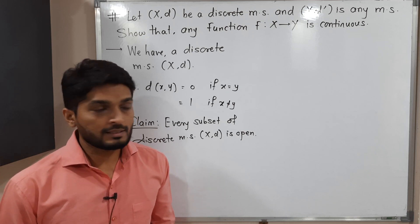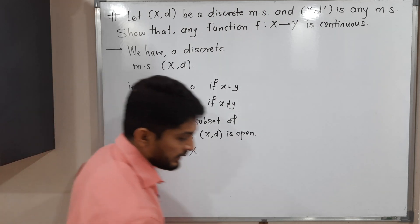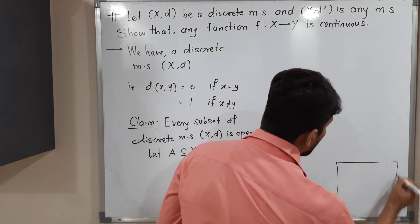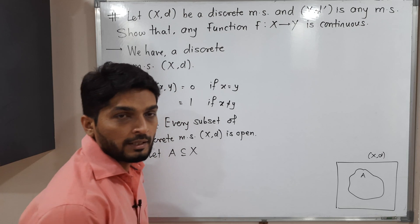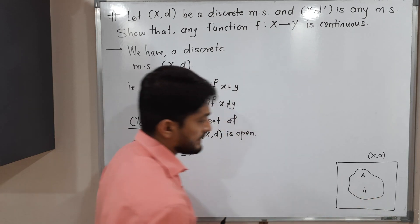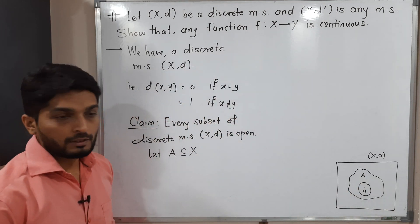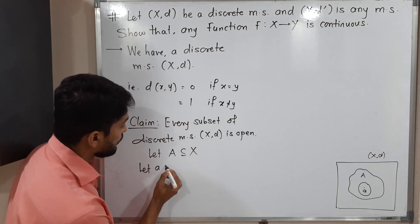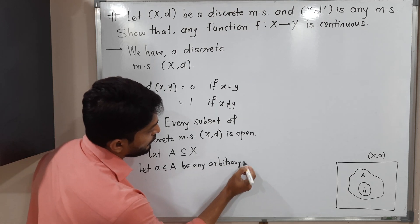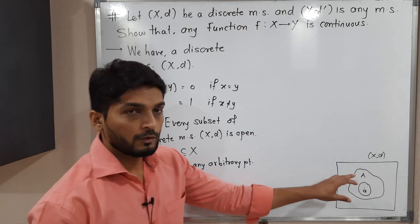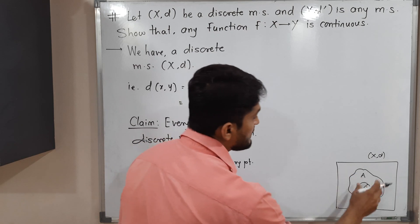Let A be any subset of X. We have to prove this set A is open. To prove any set is open, we take any arbitrary point of that set and find a ball around it which entirely lies inside set A. So let small a belong to capital A be any arbitrary point. Our target is to find a ball with center a and some radius r such that that ball lies inside set A.